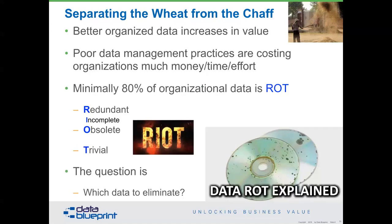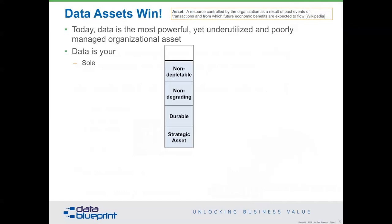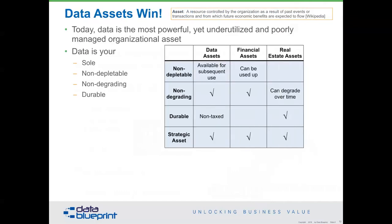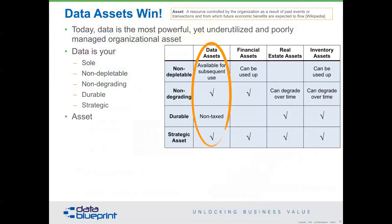With 80% of the data being ROT, we should get rid of it and work with the rest. The rest does have different characteristics. Data is the most powerful, underutilized, poorly managed organizational asset. It's the only asset you have that isn't depletable, doesn't degrade over time, and is durable in nature. Comparing it to financial assets, real estate, and inventory — data assets outperform all of these.